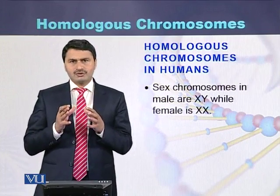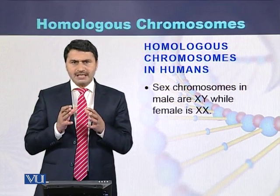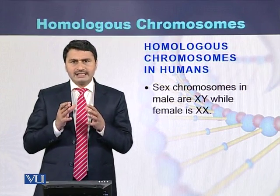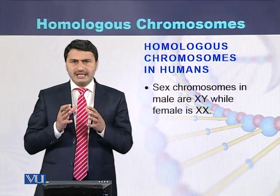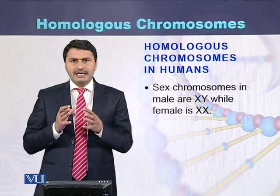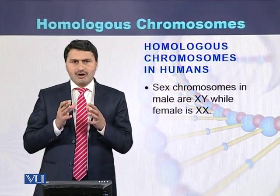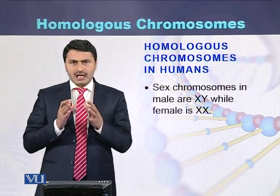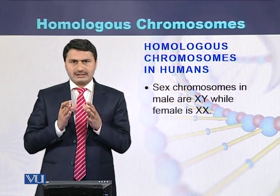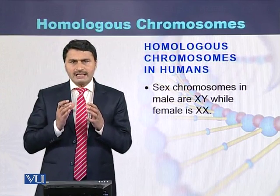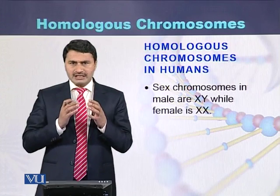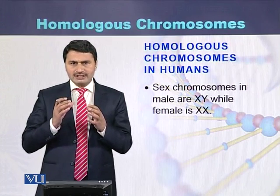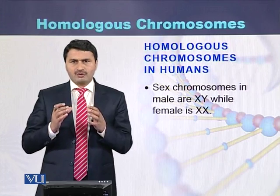The sex chromosomes in females are XX, while in males they are X and Y. In the case of females, the two X chromosomes are also homologous to each other. In the case of males, there is one X chromosome and the other is a Y chromosome.